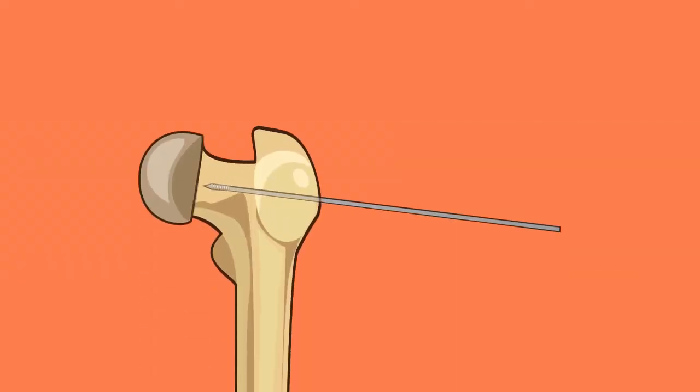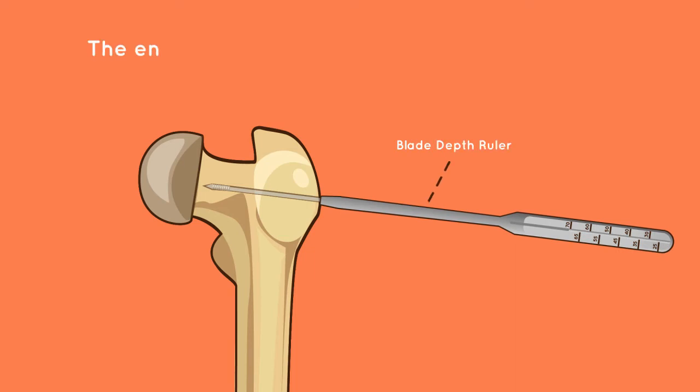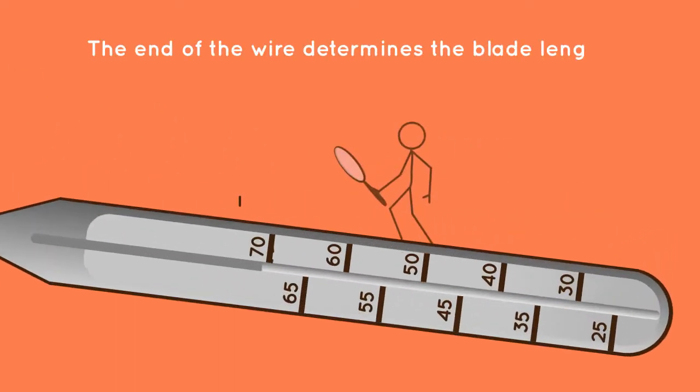Step 4: blade length measurement. Measure the blade length using the blade depth ruler over the guide wire. The end of the wire determines the blade length.